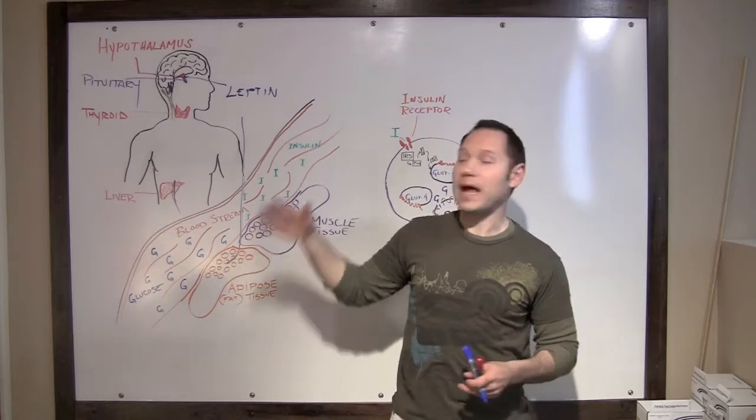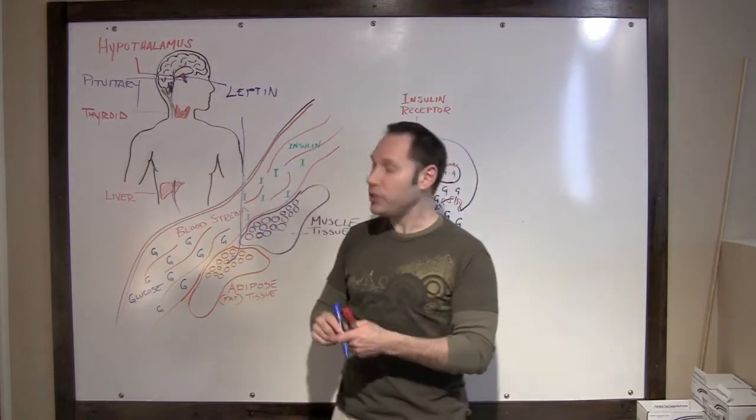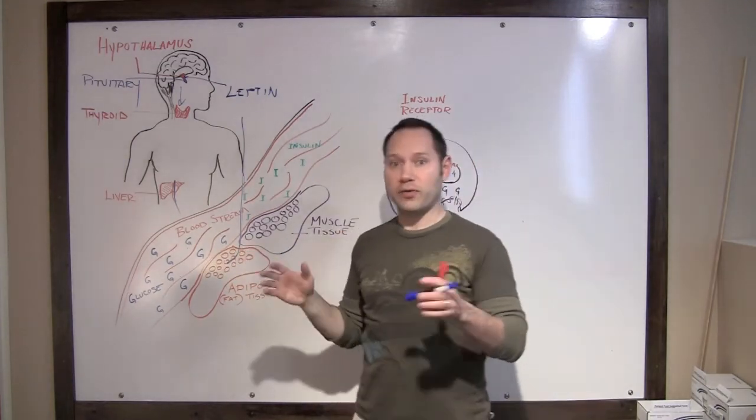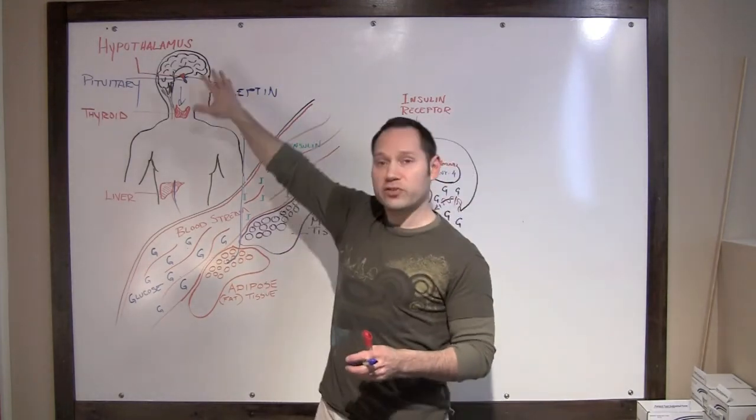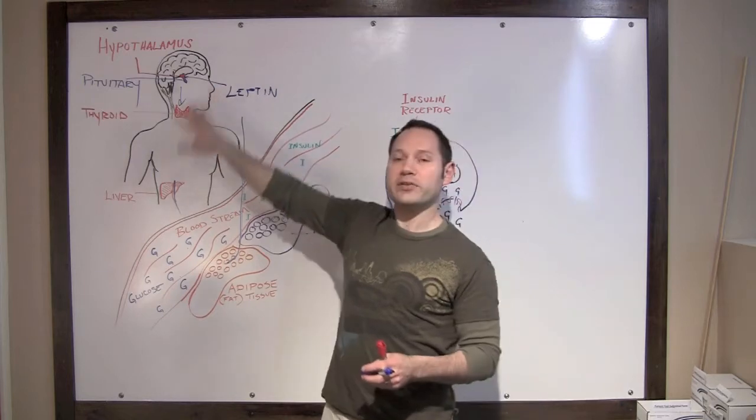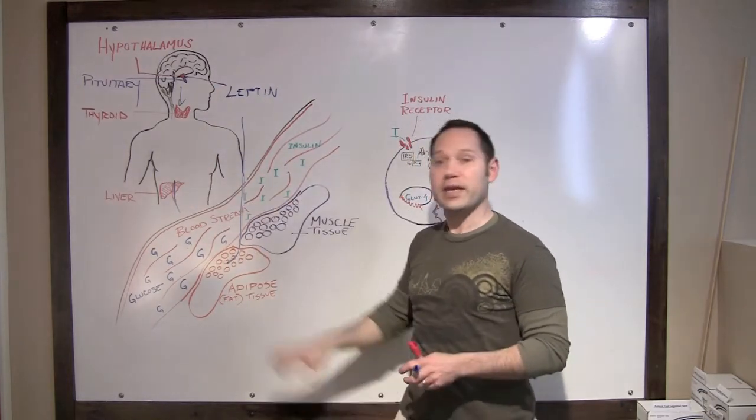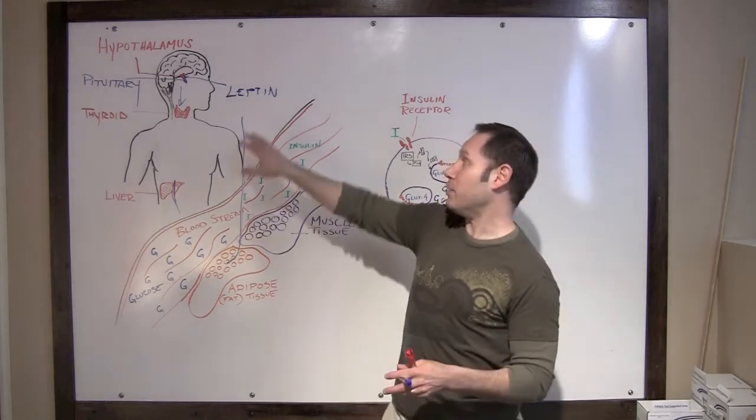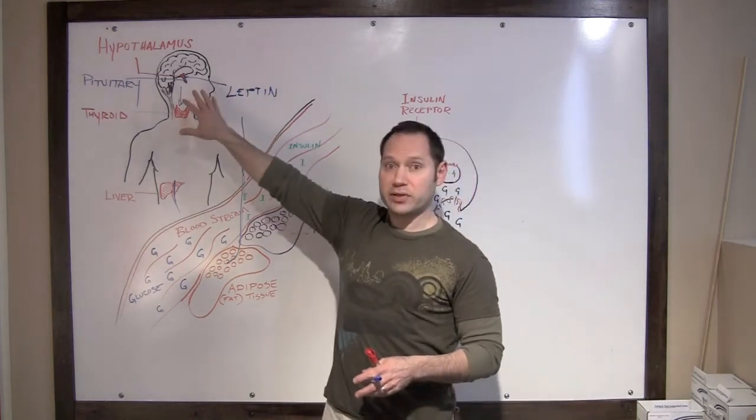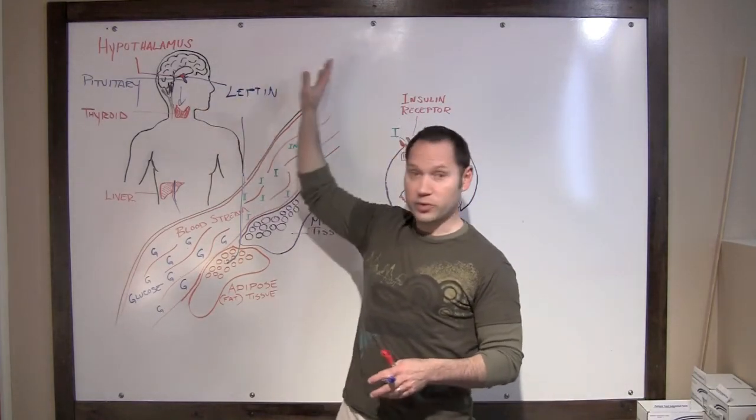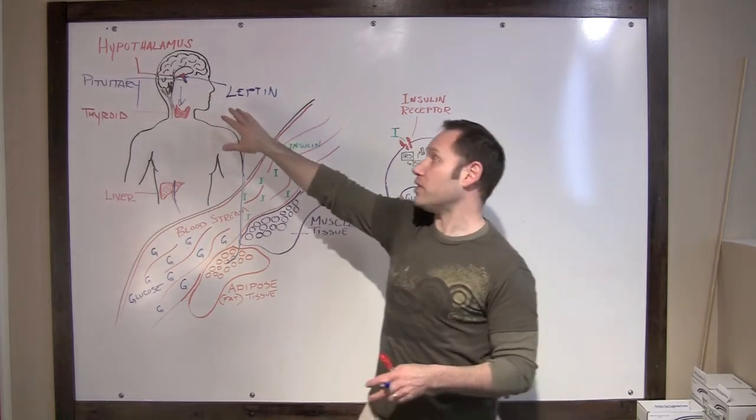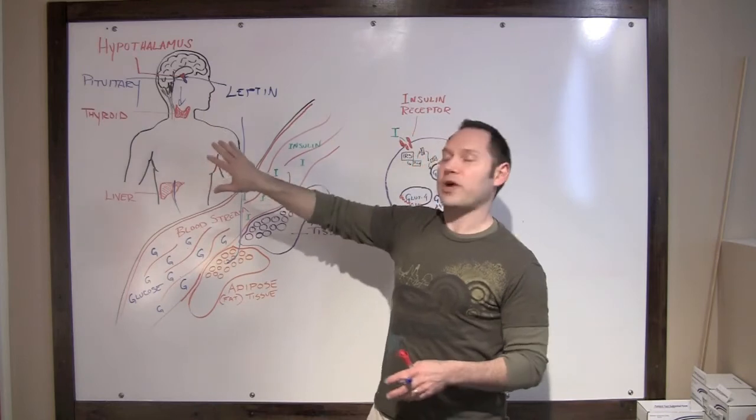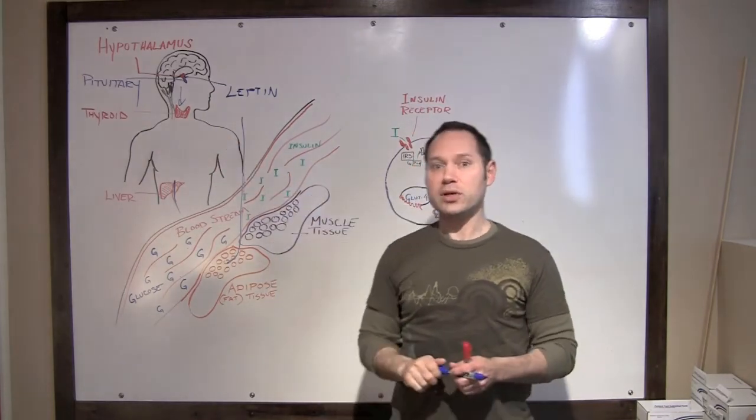From there, what happens next is that the brain is going to communicate with the thyroid. Again, if things are working, functioning properly, and that leptin signal is getting through, then the brain is going to communicate with the thyroid and say, hey, nutrient status is good, fat storage is good, let's ramp up the metabolism. But if that leptin signal is going to be blocked by inflammation or too much leptin or any other number of reasons, then that signal is not going to get to the thyroid, and the thyroid is going to slow down, or it's going to slow down your metabolism.